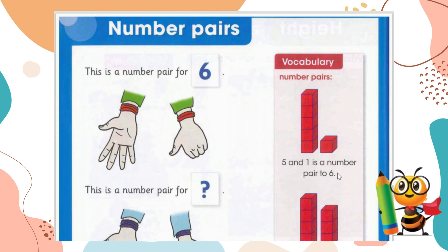Let's look at our first example — a number pair for six. What is a number pair of six? We look at the picture. There is one hand here and one hand here. To find how this is a pair of six, we count the fingers. One, two, three, four, five — so one hand has five fingers. Then we count the next hand: one.